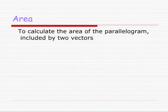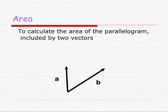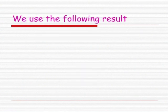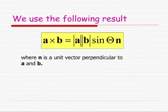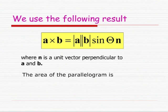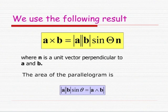Now we're going to look at calculating the area of the parallelogram included by two vectors. If we have a vector A and a vector B with included angle theta, then the parallelogram we're talking about is this one in the picture below — it has sides along A and B. To compute the area of this parallelogram, we use the formula: the vector product of A and B equals |A| × |B| × sin(theta) × a unit vector perpendicular to A and B forming a right-handed set. Then the area of the parallelogram is |A| × |B| × sin(theta), which is just the modulus of A × B.